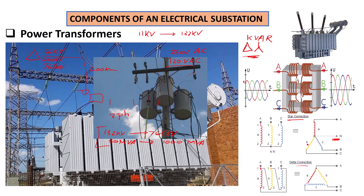All we have to know for now is that the transformers used for distribution lines — the pole transformers or the distribution transformers located on street corners — are going to have a star connection on the secondary. This is because you need a neutral connection coming into your house, as you're going to be supplied with a single phase.